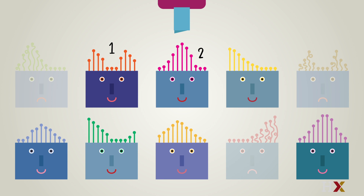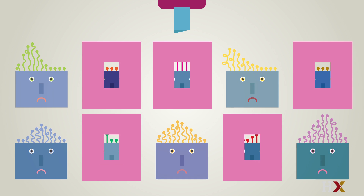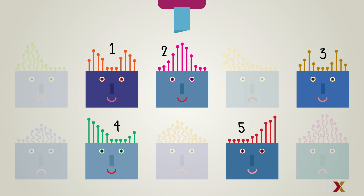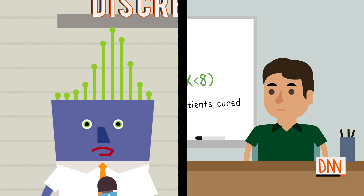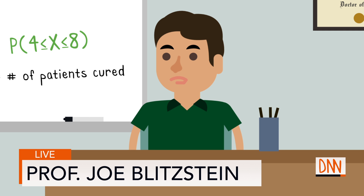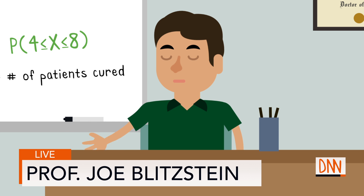But there could easily be more than 6, or fewer than 6, on a particular day. We have to consider the whole distribution. You mean, who distributes the treatment to the clinic? We should try to find out as much as we can about the treatment, but I meant distribution in the statistics sense.